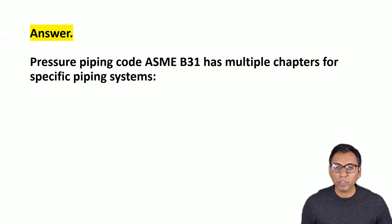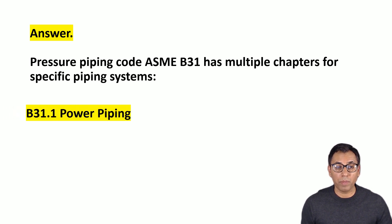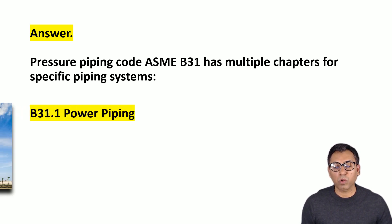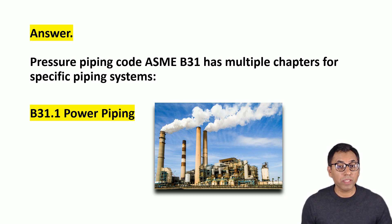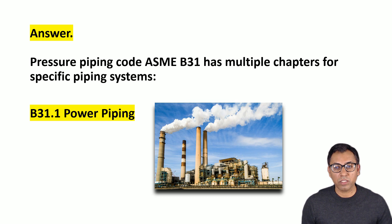The first chapter is B31.1, which is Power Piping. This code explains requirements for the design, materials, fabrication, erection, examination, testing, inspection, operation and maintenance of piping systems typically found in industries like electric power generation stations, industrial and institutional plants, and geothermal heating systems.